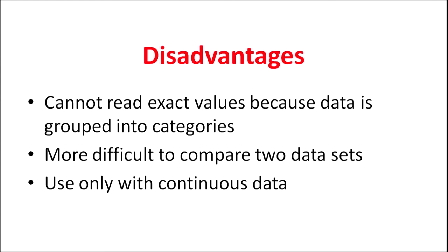Now the disadvantages: Histogram cannot read exact values because data is grouped into categories. It is more difficult to compare two data sets using a histogram — in bar graphs you can compare distributions more easily. Histogram can only be used with continuous data. If your data is in the form of certain categories, you cannot use a histogram. These were the disadvantages of using a histogram.